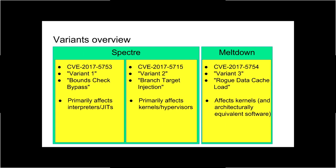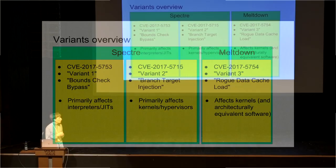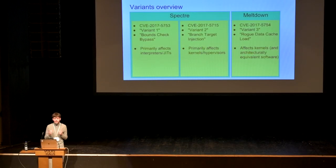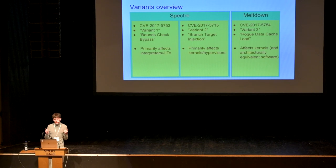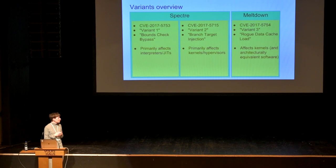A quick overview of the three variants — the naming is a bit confusing because multiple groups supplied names. The first two variants are named Spectre and the third is named Meltdown. Variant one can be characterized as bypassing bounds checks, primarily affecting interpreters and JITs. Variant two is injection of branch targets, primarily affecting kernels and hypervisors. Meltdown affects operating system kernels and software that architecturally behaves like an OS kernel.